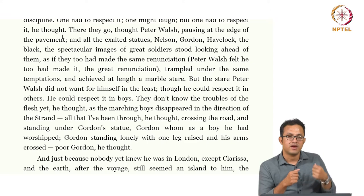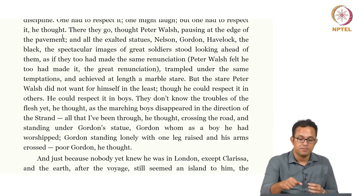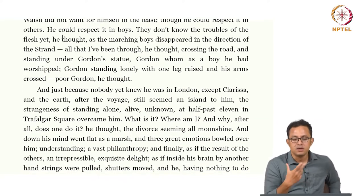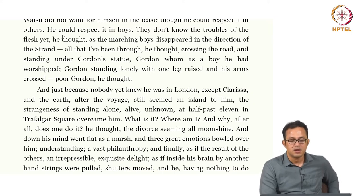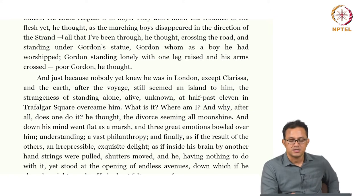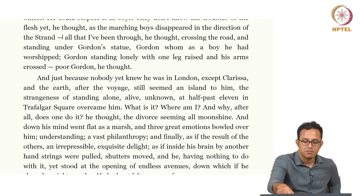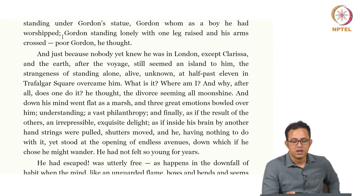Peter Walsh has returned as a cynical, fragmented, and completely alienated man who cannot connect with the metropolis. The following passage captures this: 'And just because nobody yet knew he was in London except Clarissa, and the earth after the voyage still seemed an island to him, the strangeness of standing alone, alive, unknown at half past eleven in Trafalgar Square overcame him. What is it? Where am I? And why, after all, does one do it?' Yet, he also experiences three great emotions: a vast philosophy, a vast philanthropy, and finally an irrepressible, exquisite delight. He had not felt so young for years.